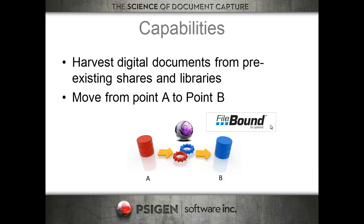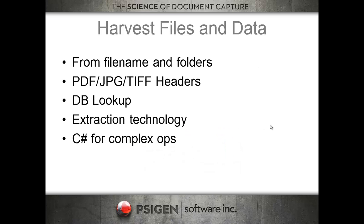The harvesting capability gives you real power to extract metadata from folder and file names without any custom code or clunky solution. We can harvest information from file names and folders, read data from PDF forms and PDF headers, read photograph information and TIFF headers. Once we gather that information, we can run DB lookups, use our pattern matching, extraction, and classification technology, and we've also got a scripting engine. Some partners have written complex code for really unique classification as we're harvesting files and posting them into the back-end repository.